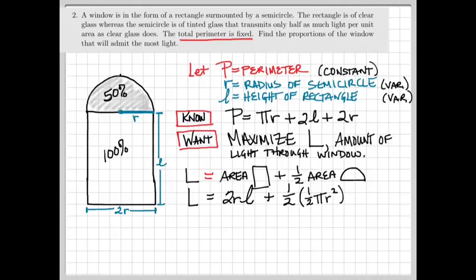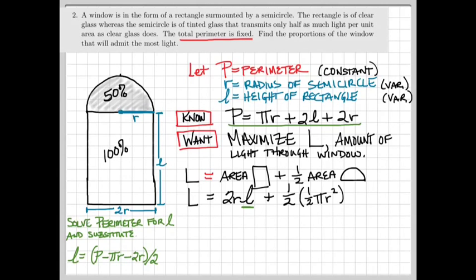We have two variables involved here, L and R. It looks like it's going to be easiest to substitute out for L and have our light function entirely in terms of the radius R. So solving the perimeter constraint for L gives us that L is going to be (P - πR - 2R)/2. This can be substituted into our light function, giving a function entirely in terms of the variable R, which we can now try to maximize by taking the derivative with respect to R.